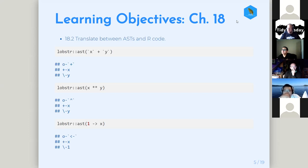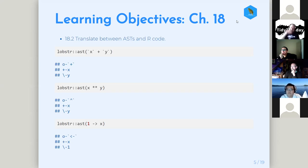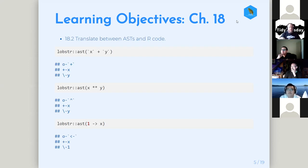There's a question about backticks in front of X and Y in the first example — those were just a copy-paste artifact from the book's lobstr calls. The basic idea is it's a tree: at the top you've got the thing, and then you've got the breakdown. Unfortunately, certain ASTs are particularly ugly to look at.